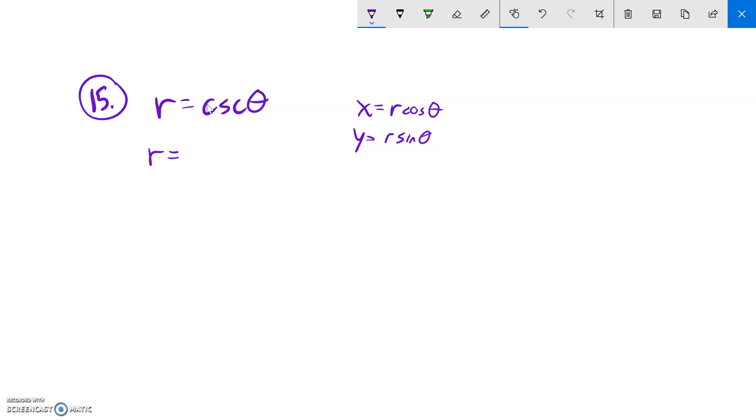If I think about cosecant, cosecant is one over sine. So this is the same as one over sine theta.